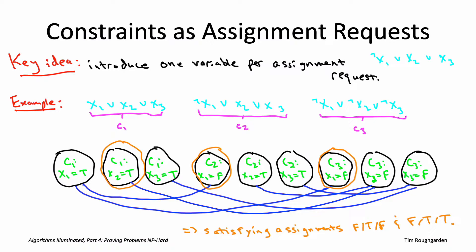We also need to handle the case of an unsatisfiable 3SAT instance. The solution is to add all edges within each group, imposing a triangle on each triple of vertices. This ensures any independent set can pick at most one vertex from each group. If the maximum independent set has fewer than m vertices, we can immediately conclude the original 3SAT instance was unsatisfiable.